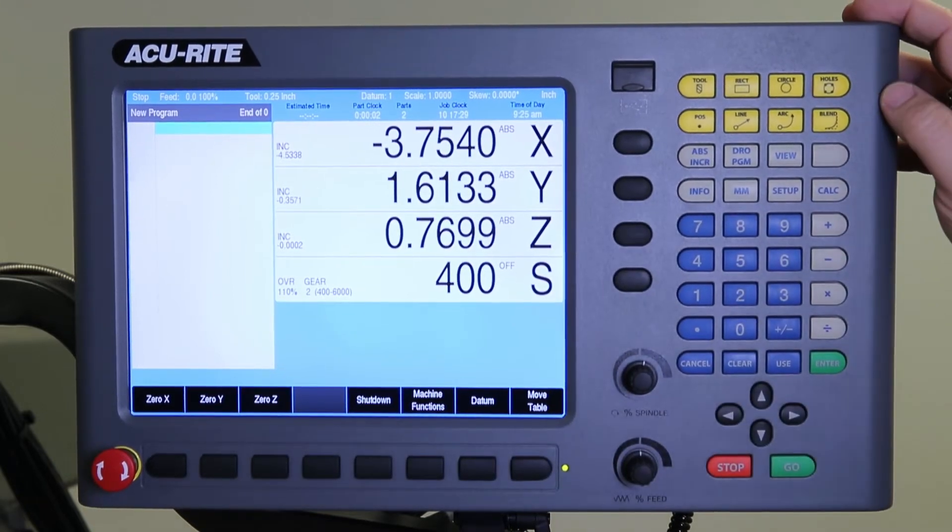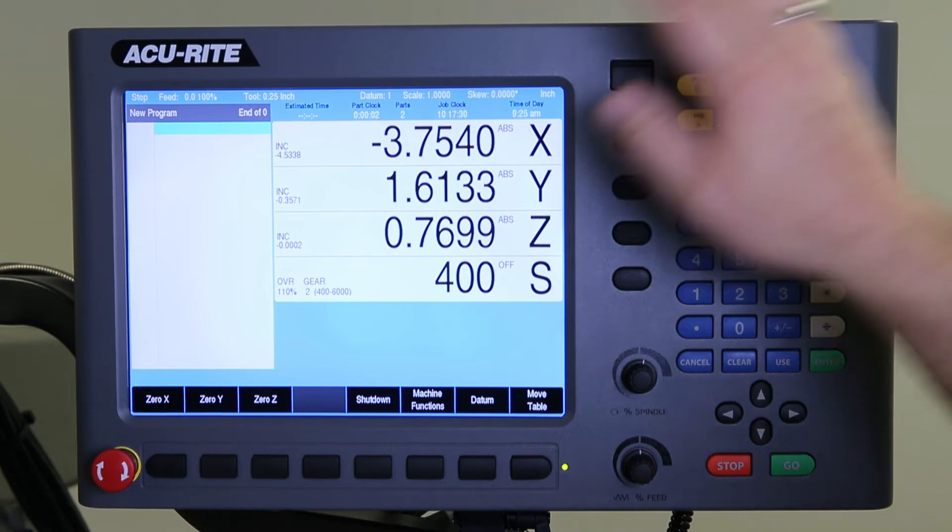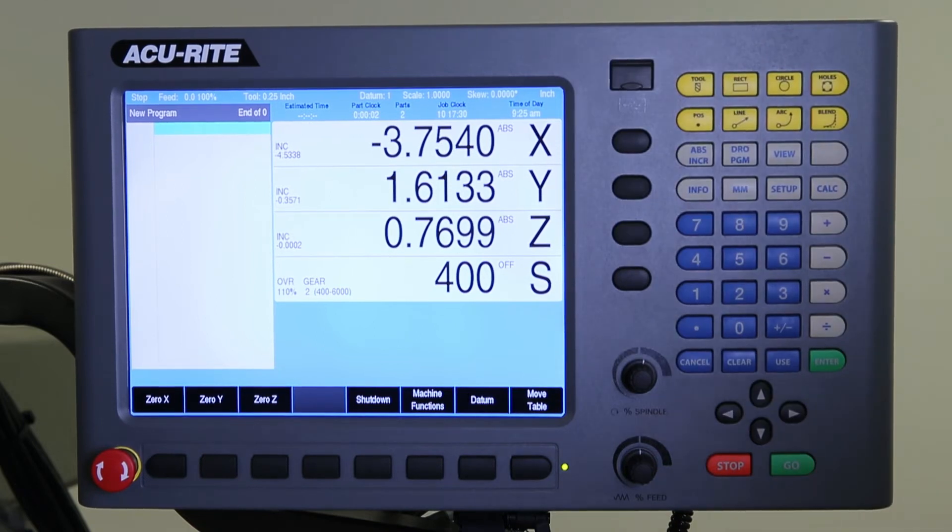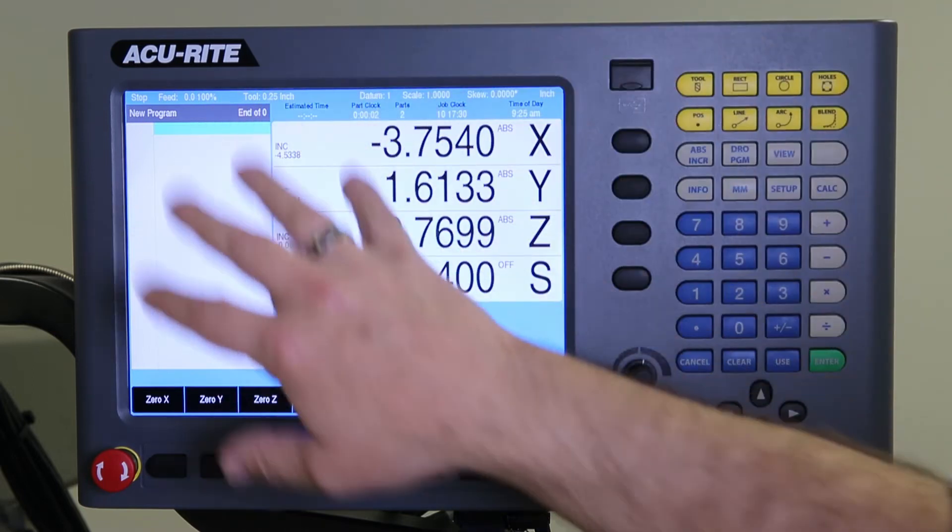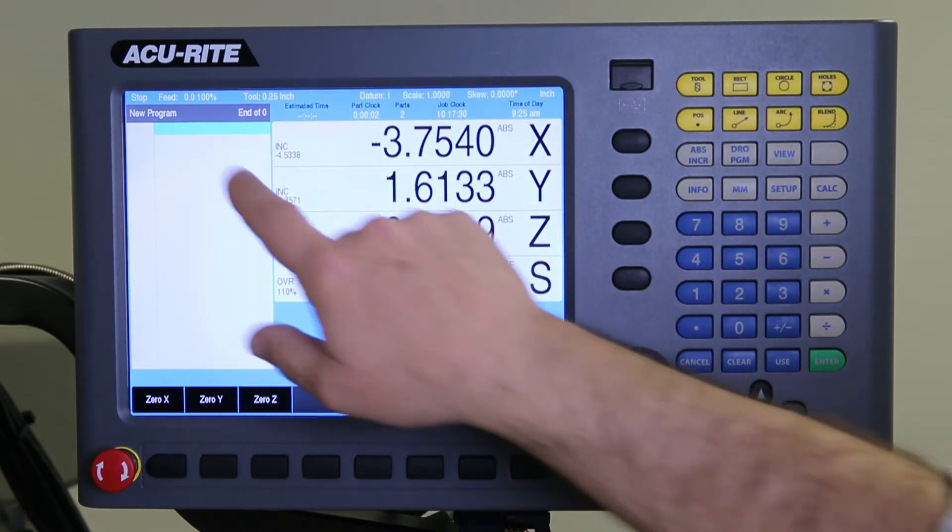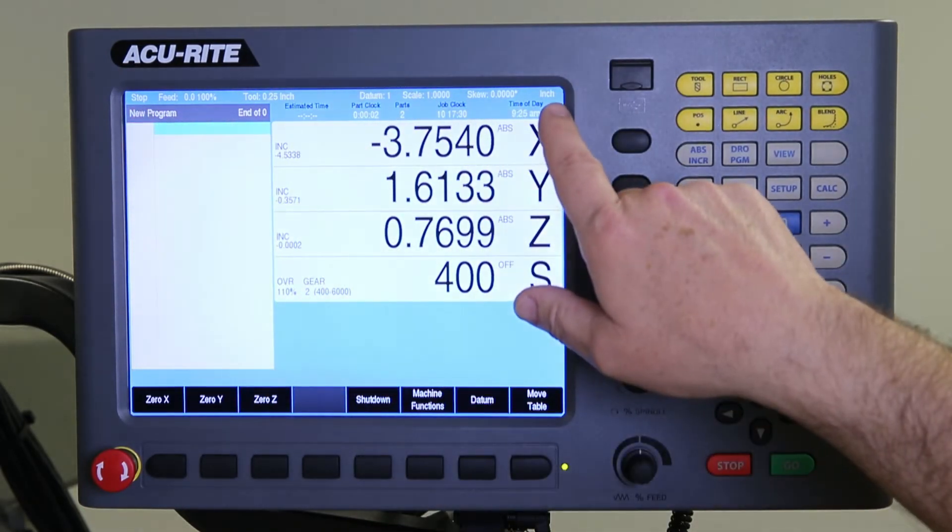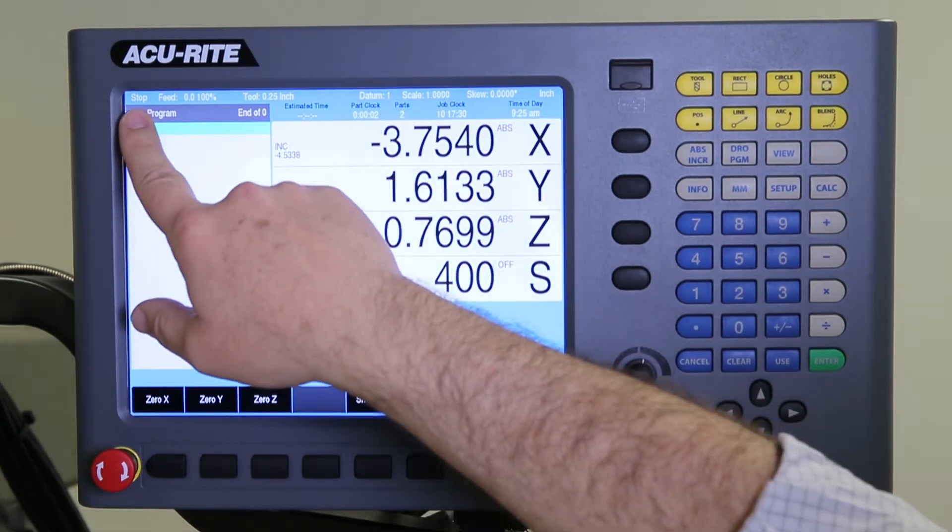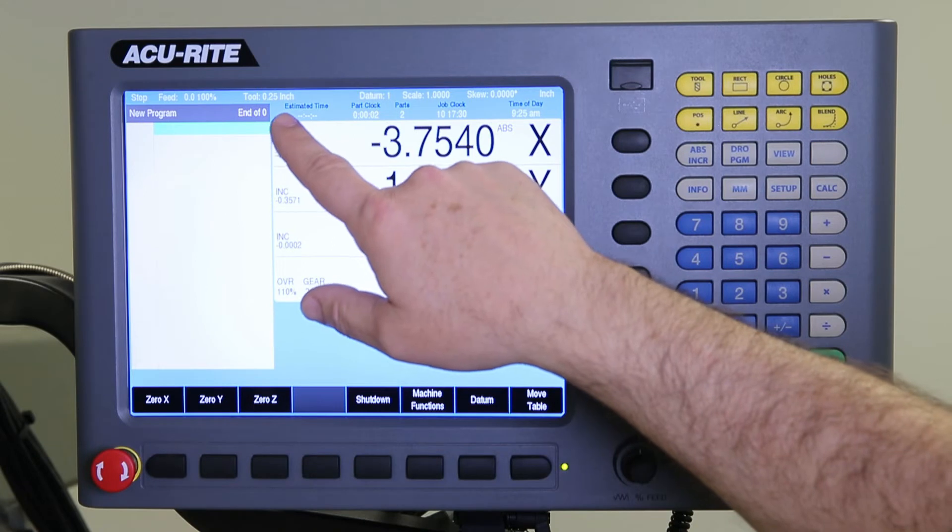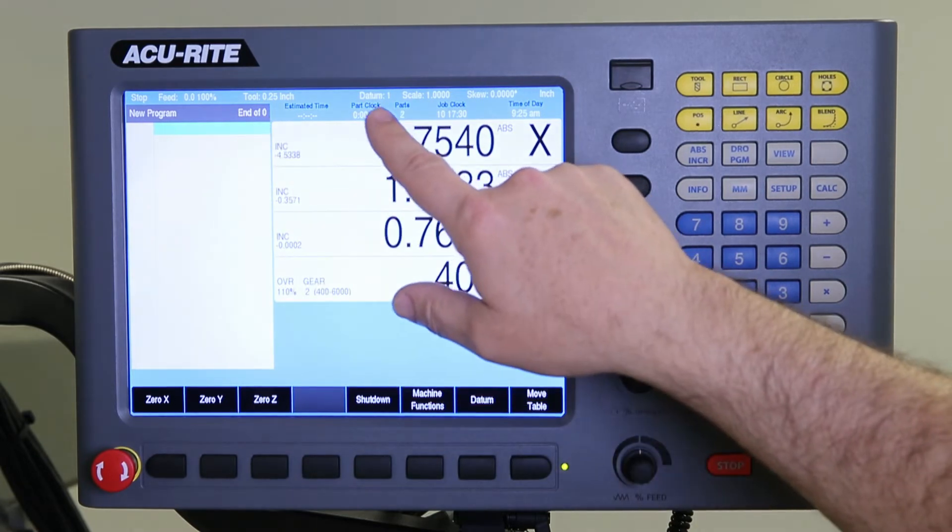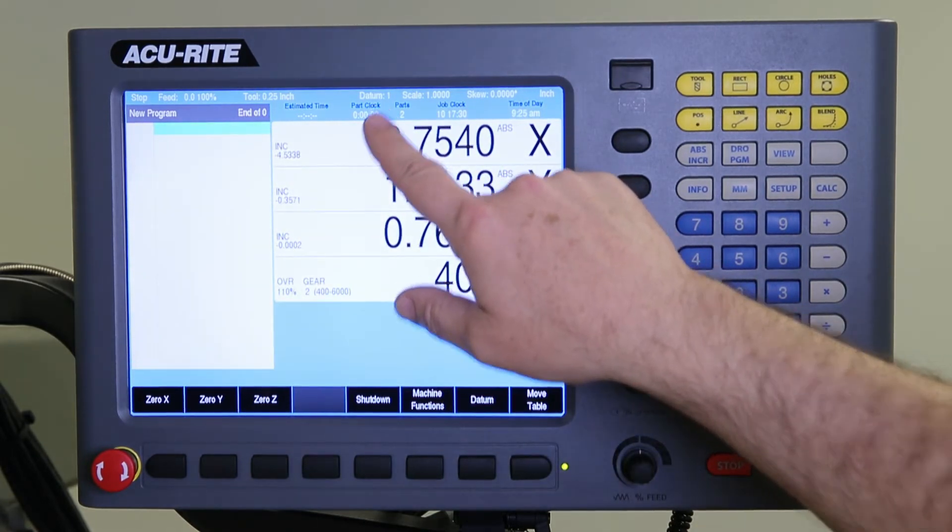Today we'll go through a quick overview of Accurate's mill power control. This is what we call the DRO display and at the top here we have a status bar where we indicate whether the drives are on or off, what the current feed rate is that you're running at, your tool information, and what datum number you're on or using.